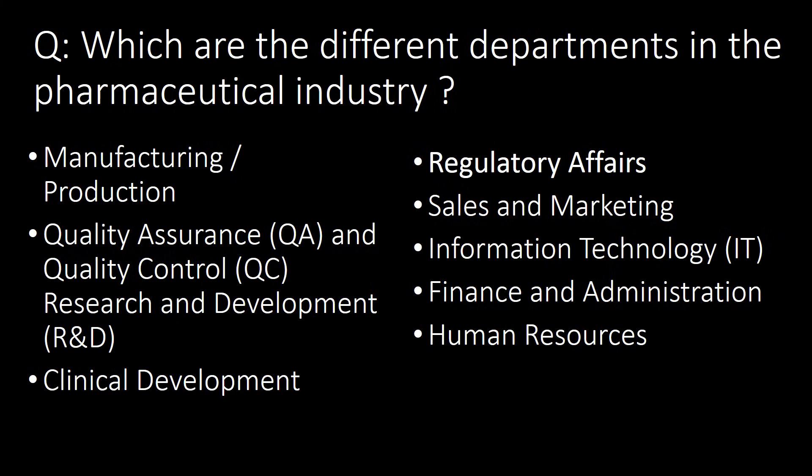First technical question: which are the different departments in the pharmaceutical industry? Manufacturing or production, quality assurance (QA) and quality control (QC), research and development (R&D), clinical development, regulatory affairs, sales and marketing, information technology (IT), finance and administration, and human resources are the different departments in the pharmaceutical industry.